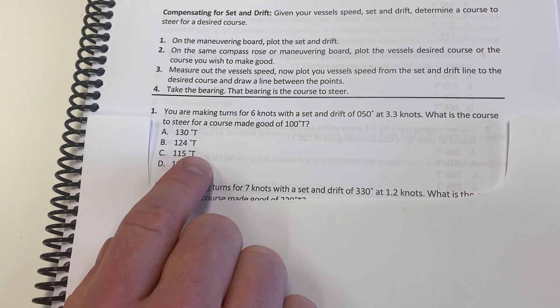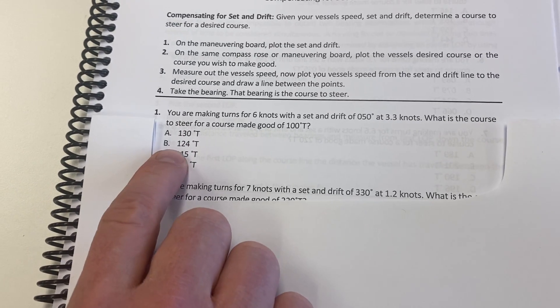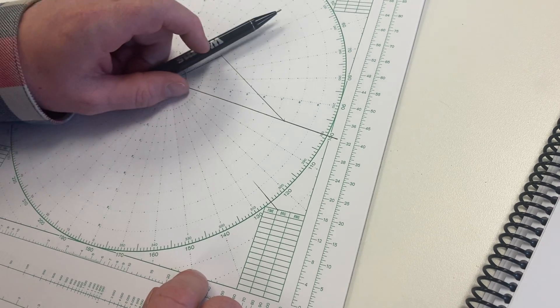130 is way off. 124 is pretty close, much closer than C and D here, and that's actually our answer. We're going to steer a course of 124 to hit 100 degrees true with that set and drift trying to push us off.